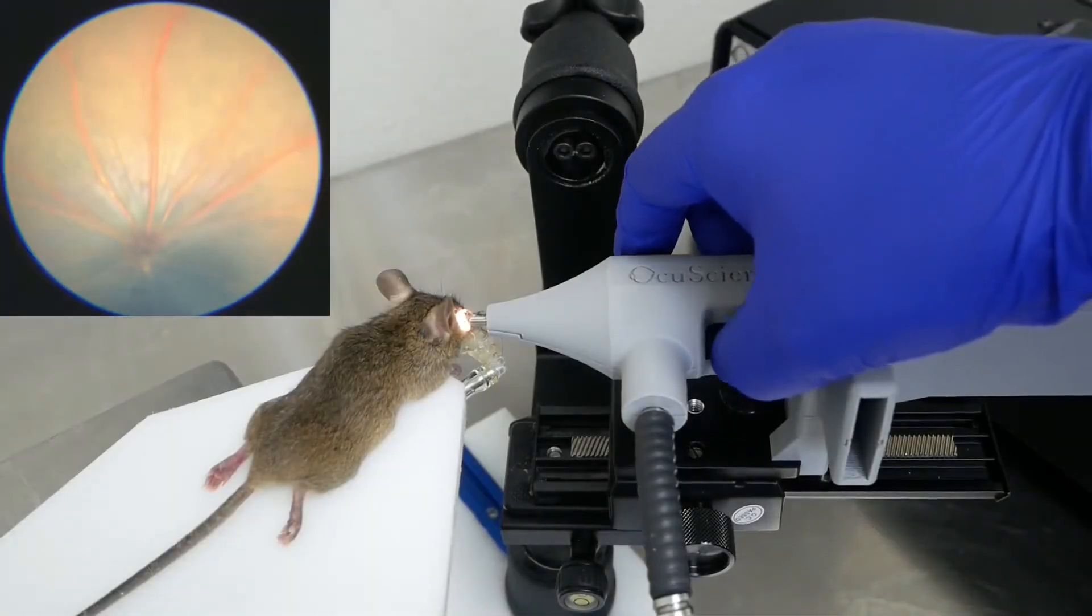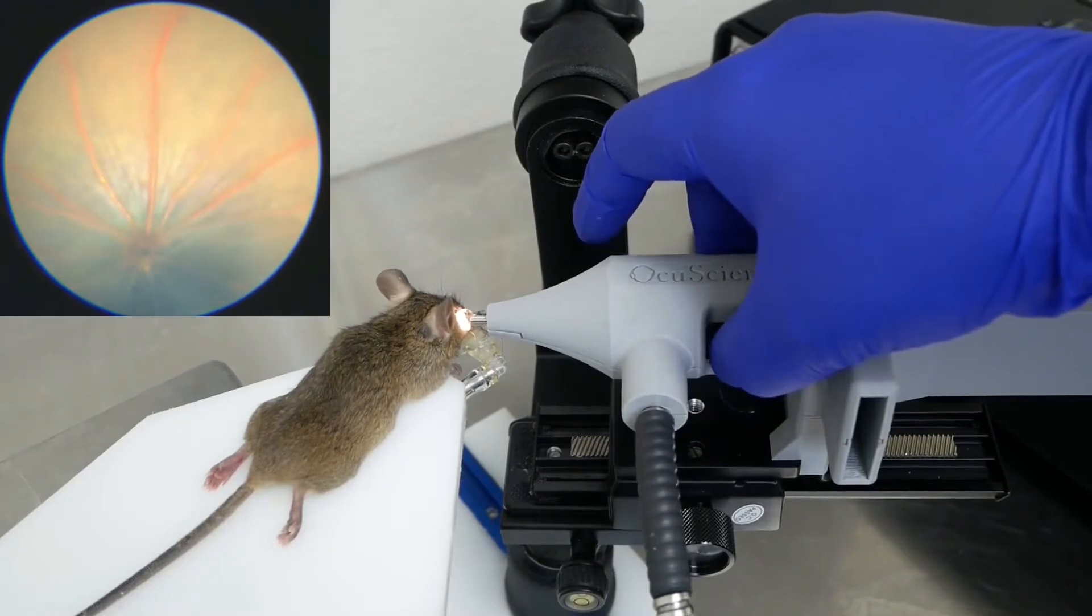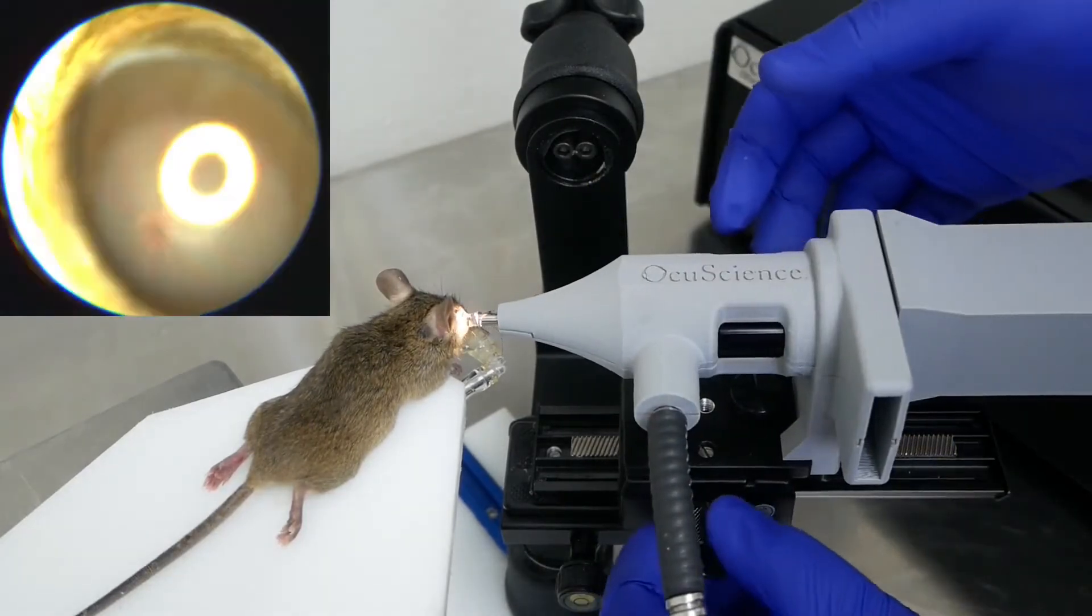Aligning the scope and the rodent eye is simple to learn, and with the twist of a single knob, you can quickly bring the imaging focus from anterior to posterior.